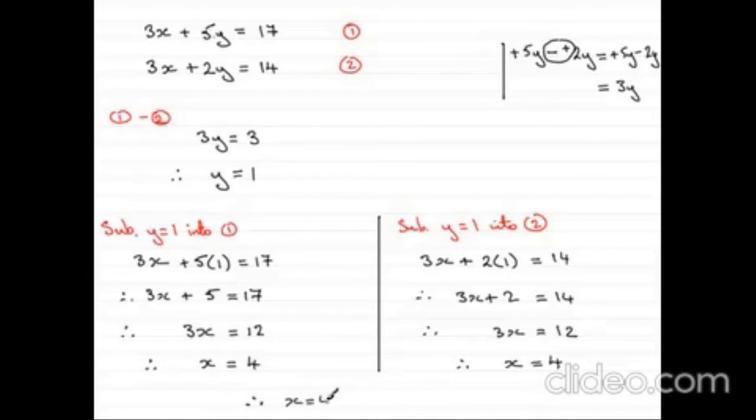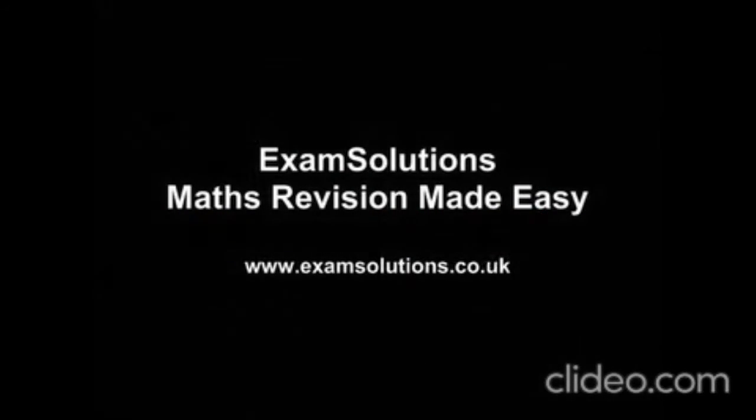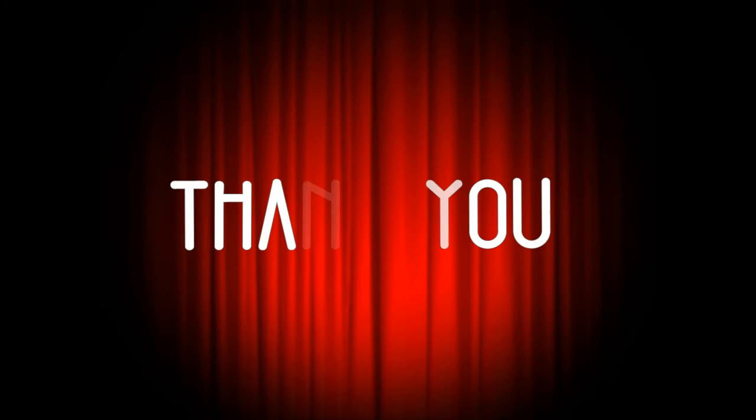Let's summarize the answers. We have got two answers. One for x, another for y. x is equal to 4, and y is equal to 1. So this is how we solve simultaneous equations by elimination method. We cancel out the like terms with opposite signs.